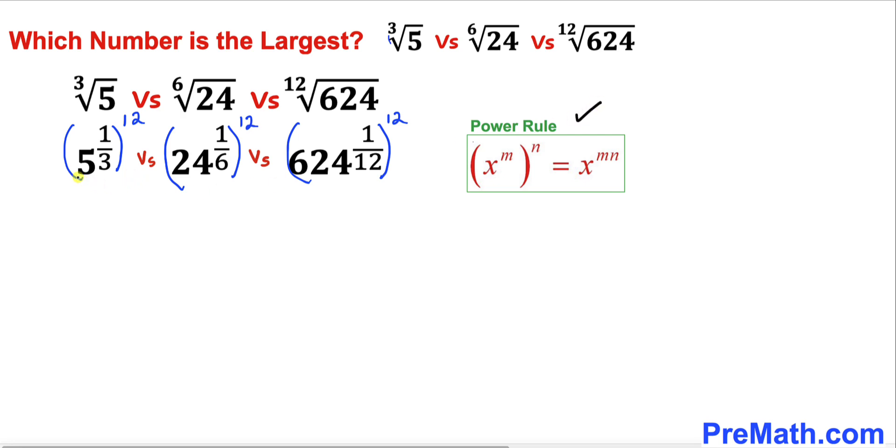Now let's recall this power rule of exponents. Applying it to the first number is going to give us 5 to the power 4. For this next one, it's going to give us 24 to the power 2, and finally for this one, it's going to be 624.